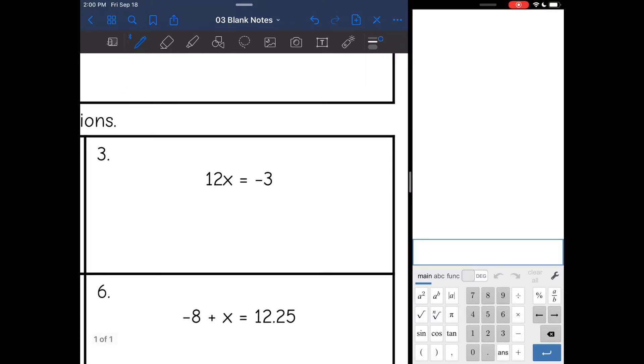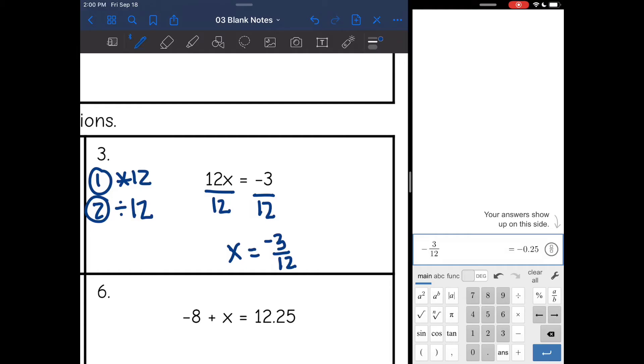Next one, what is happening to x? I have this 12 in front of it, which means I am multiplying x by 12. How do I undo that? The opposite of multiplication is division. So I'm going to divide both sides by 12. And x is equivalent to negative 3 twelfths. I'm going to use the Desmos calculator to reduce that fraction. Negative 3 twelfths is equivalent to negative 1 fourth.